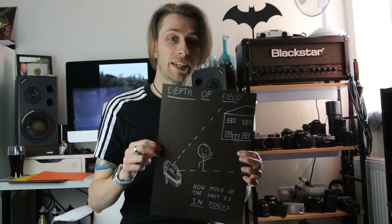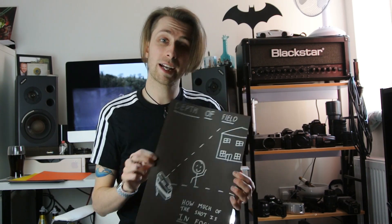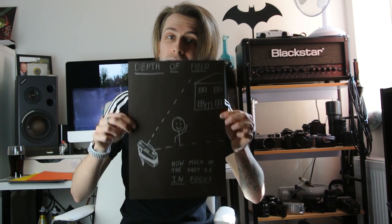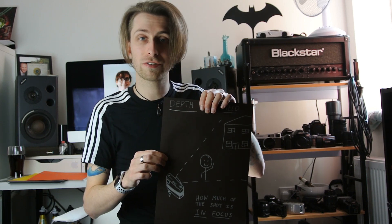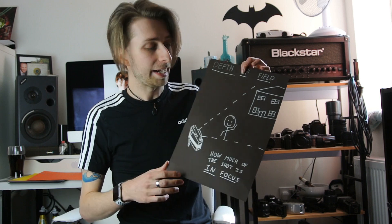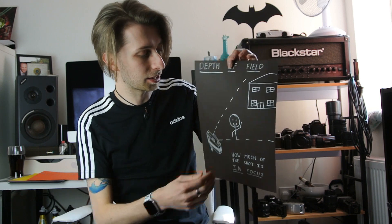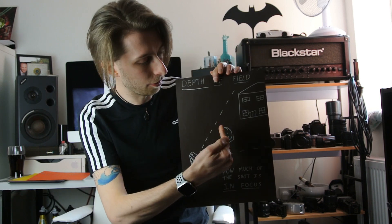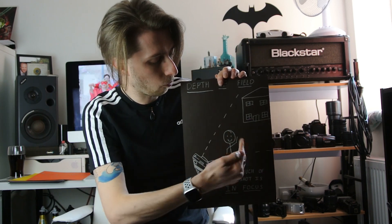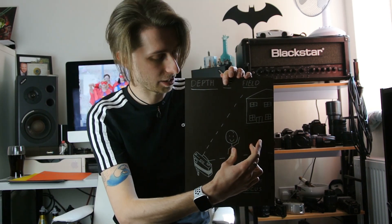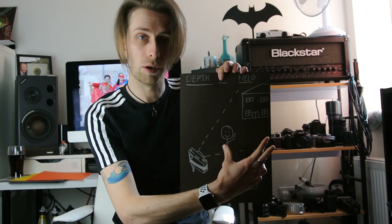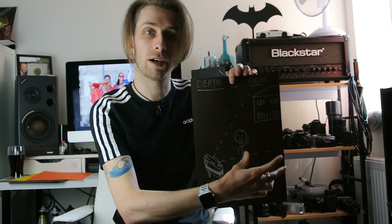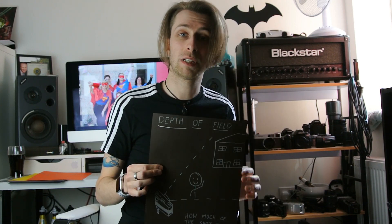Hello! Thank you very much for joining me again. Today we're going to be looking at depth of field. Depth of field — the long and short of it is how much of your image is in focus. So, front to back, what is the area of focus there? Is it just the person? Is it the person going all the way to the background? That's what we're going to be looking at today.